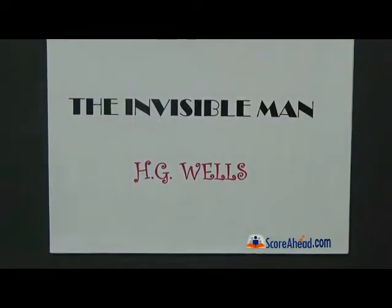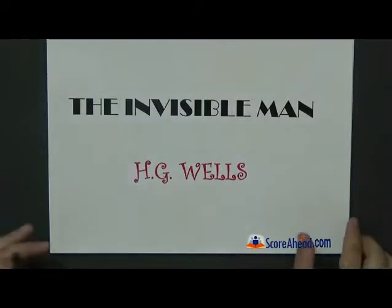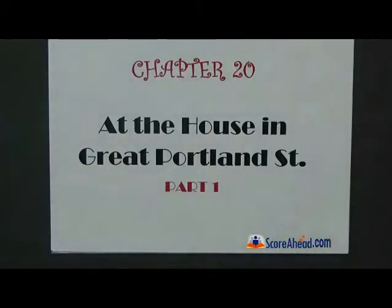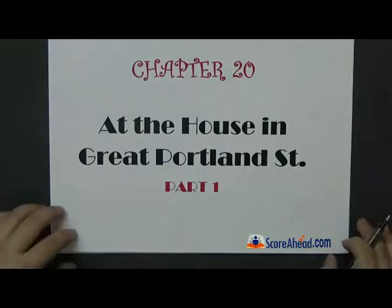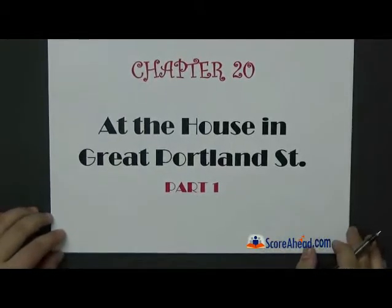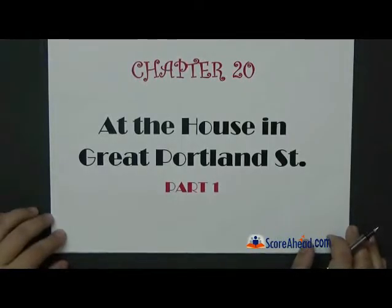The Invisible Man by HG Wells. Today we are on chapter number 20 and as you can see, chapter number 20 is also going to be divided into part 1 and part 2 and here we have the part 1 of this chapter at the house in Great Portland Street.